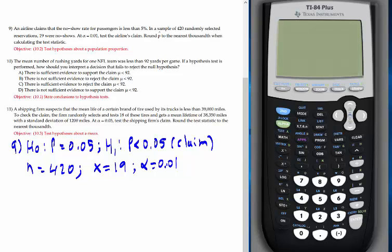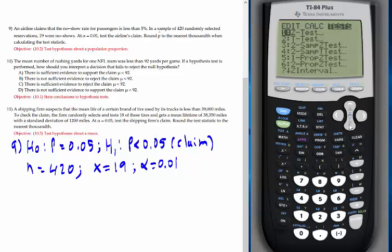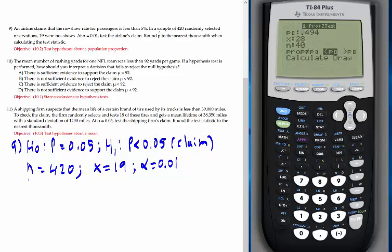I'm going to show you how to test this using the calculator. Turn the calculator on, go to Stat, Tests. This is a test for proportion, so go to one proportion Z-test. p0 is the value in the null hypothesis, which is 0.05. Don't write 0.5, it's 0.05. x is 19, n is 420. We're testing less than, make sure to select it and press enter, then hit calculate.